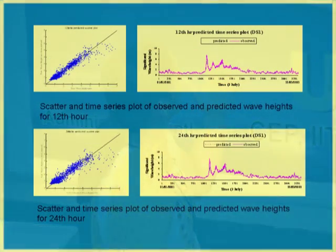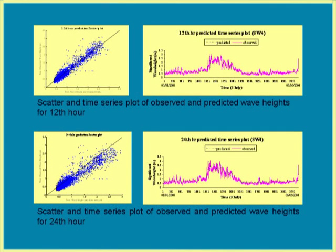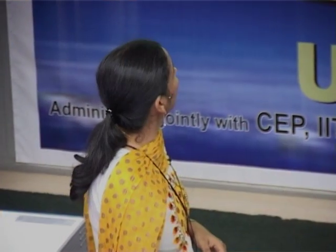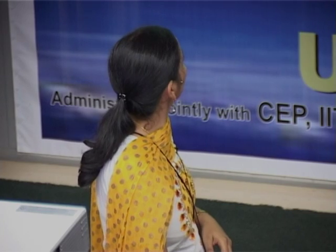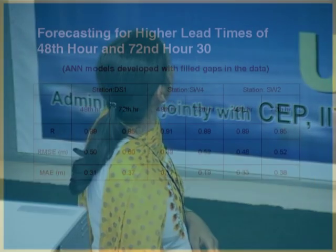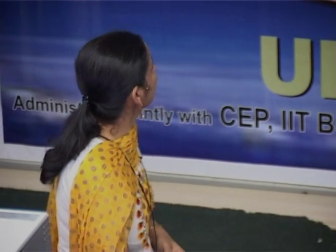We get an improved peak prediction model for higher lead times. For various lead times, the number of inputs changes accordingly. The scatter reduces when using the hybrid model. This comparison is for the ANN model for 12th and 24th hour, and also for 48th and 72nd hour. In case of 12th and 24th, the results were comparable, but for higher lead times it deteriorates.